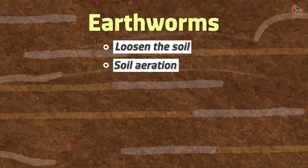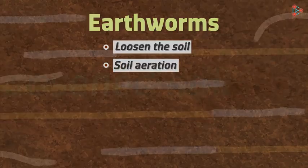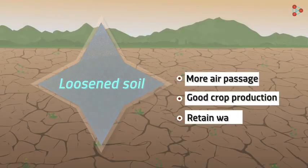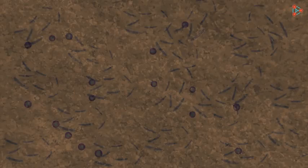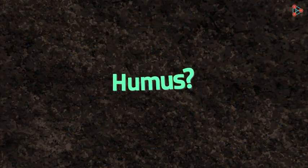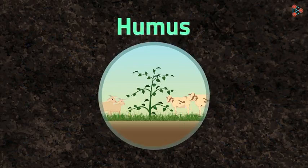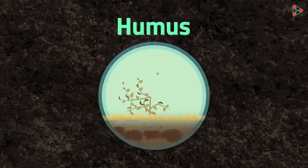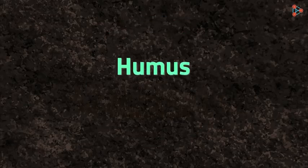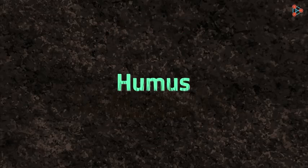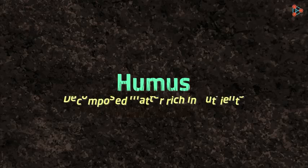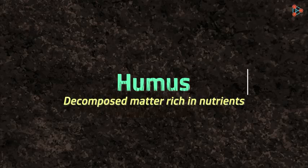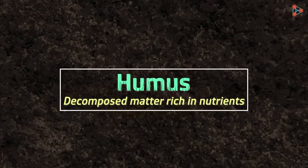Do you know another advantage of loosening of the soil? It also helps the soil to retain water. It then leads to the growth of favourable microbes that help to produce humus in the soil. What exactly is humus? As we know, all living things die, their remains are decomposed and nutrients are returned back to the soil. The microbes help in this process of decomposition. This decomposed matter is rich in nutrients and is known as humus. It is what plants depend on for nutrition.